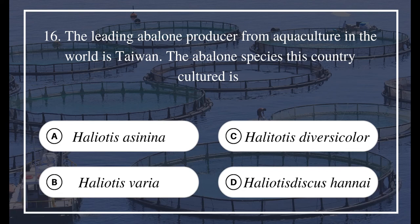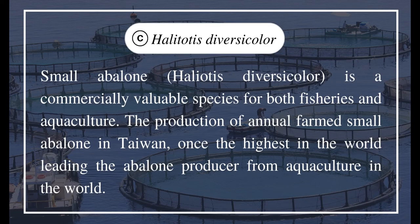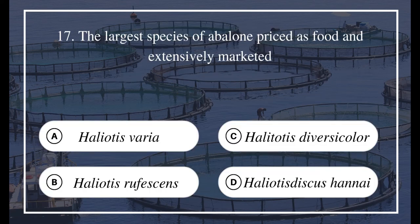Question 16: The leading abalone producer from aquaculture in the world is Taiwan. The abalone species this country cultures is: a) Haliotis asinina, b) Haliotis varia, c) Haliotis diversicolor, d) Haliotis discus hannai. The answer is C, Haliotis diversicolor. Small abalone Haliotis diversicolor is a commercially valuable species for both fisheries and aquaculture. The production of farmed small abalone in Taiwan was once the highest in the world, making it the leading abalone producer from aquaculture.